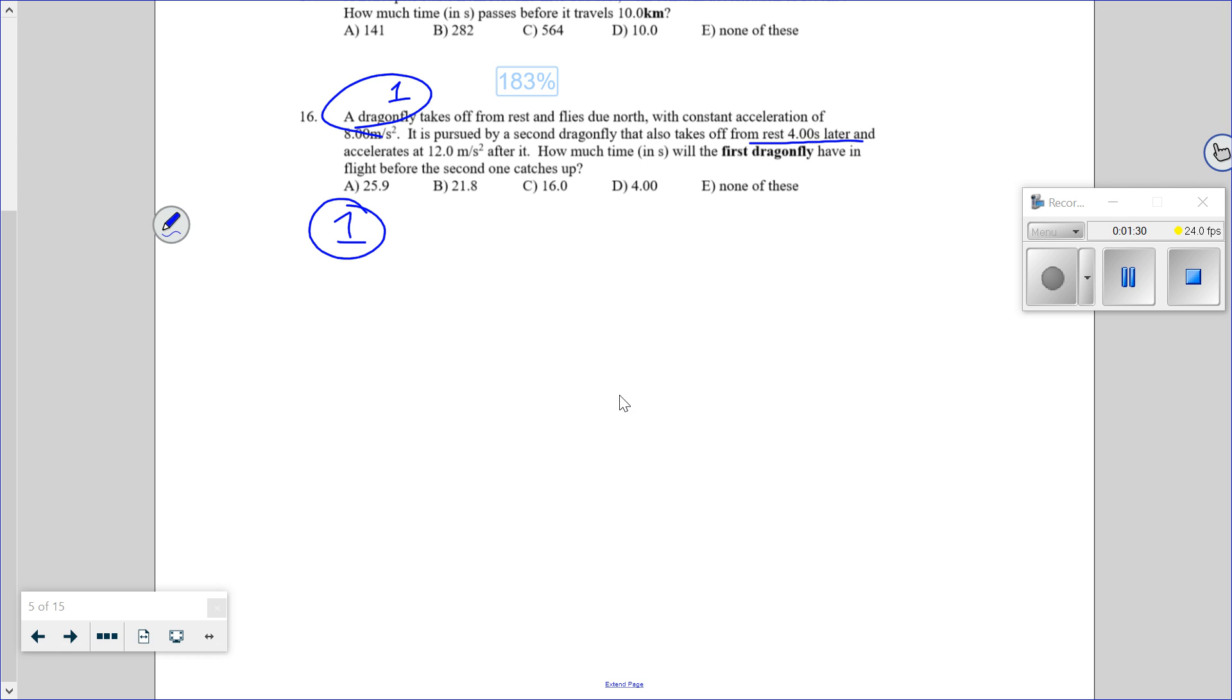Okay, the first one takes off, and its acceleration is plus eight meters per second squared. Hopefully you just get in the habit of writing units. And then it's pursued by a second one that can accelerate faster. Did you know dragonflies eat other bugs? They're like the super insect predator. They eat everything, even each other. And they're so fast and so agile, they never crash into humans. Only cars sometimes. Anyway.